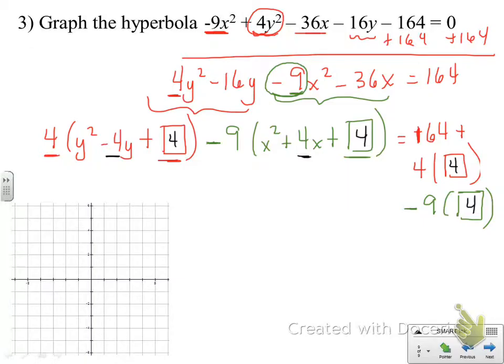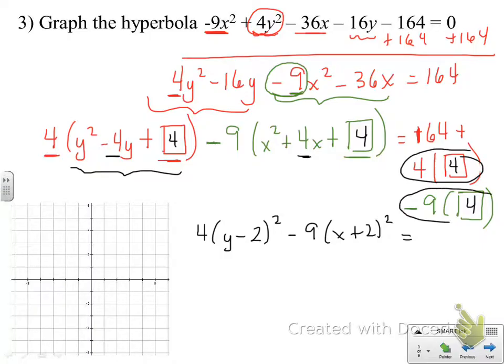Let's go ahead and clean this up a little bit. We've got this trinomial here. Just like any other, we want to write it as the square of a binomial. So, that's going to look like this: 4 times (y minus 2) squared minus 9 times (x plus 2) squared. And when I combine all of my like terms over here on the other side, what I really have is 164 plus 16 minus 36. And that gives me a constant of 144.